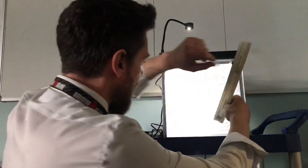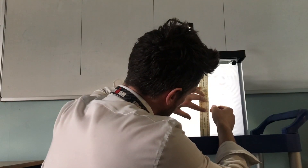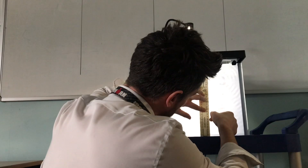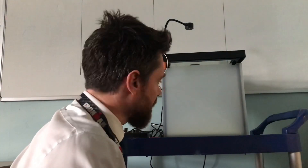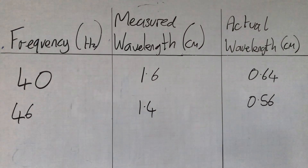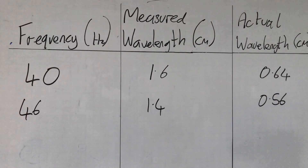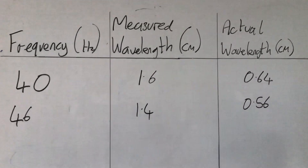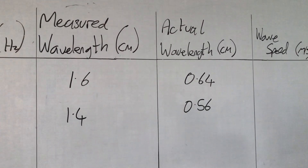Increasing the frequency to 46 hertz, we go through the same process — placing the ruler on the screen and measuring five wavelengths. That takes us from 15 to 22 centimetres, so five wavelengths is 7 centimetres. Dividing by five gives a wavelength of 1.4 centimetres. Dividing by the magnification of 2.5 gives an actual wavelength of 0.56 centimetres at 46 hertz.